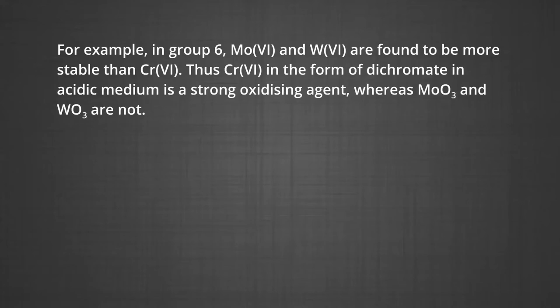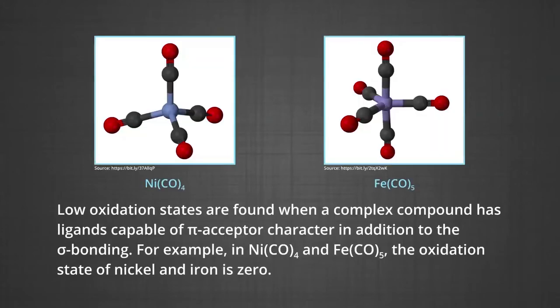Low oxidation states are found when a complex compound has ligands capable of pi-acceptor character in addition to sigma bonding. For example, in tetracarbonyl nickel and pentacarbonyl iron, the oxidation states of nickel and iron are 0. Their structures are shown on the screen.